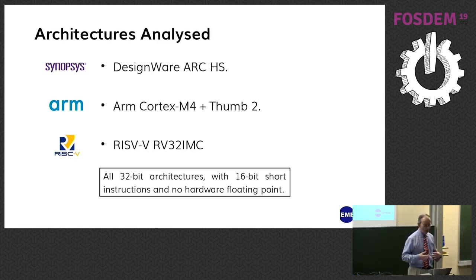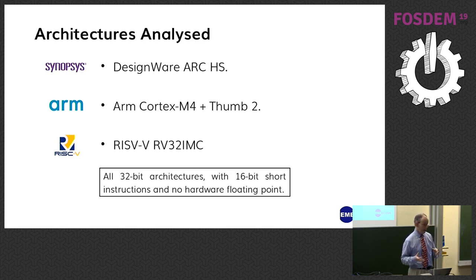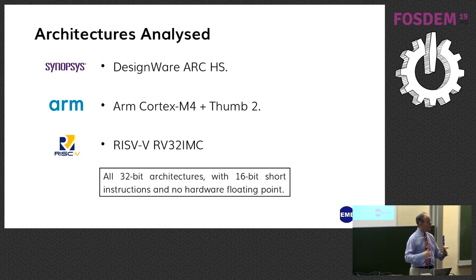Those are all 32-bit architectures. They've all got 16-bit short instructions, and in all cases we've been looking at them without hardware floating point. The Designware ARC HS is a bit out of place — we really ought to have looked at their EM architecture, which is their embedded architecture. The reason it's HS is because the customer we're doing this for is using HS and wanted a comparison. What we're trying to do is find out what each does well and what each does badly as a compiler.